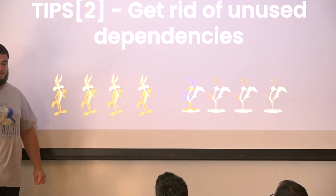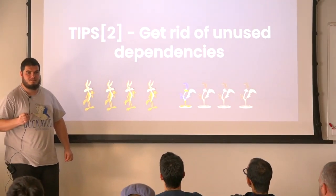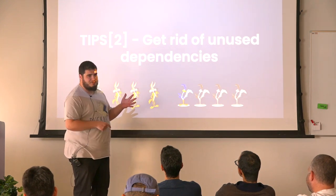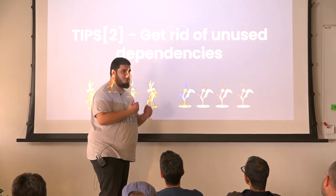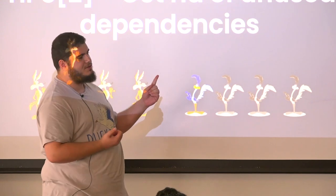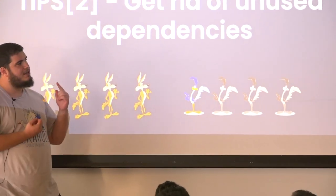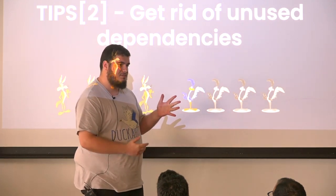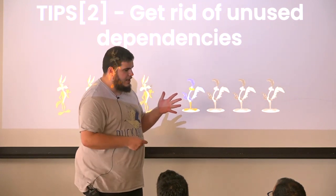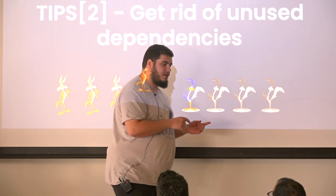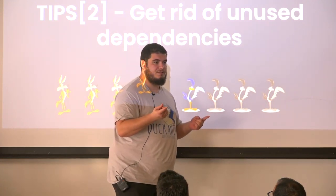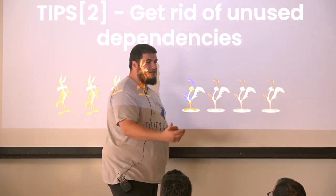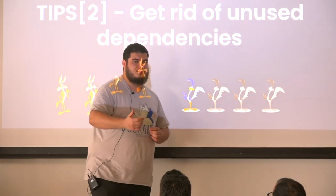Get rid of unused dependencies. There is no easier way to do less work than doing less work. Getting rid of unused dependencies sometimes simplifies the build tree, and some things may be able to be executed in parallel much sooner. Thanks to my colleague Jay, it might be much easier with Gazelle. Gazelle is a build file generator, but you can also use it to trim unused dependencies. It reads source files and either generates build files or corrects them. It works brilliantly in Go, with some extensions for other languages like Java.